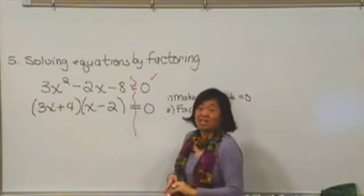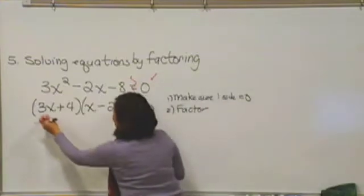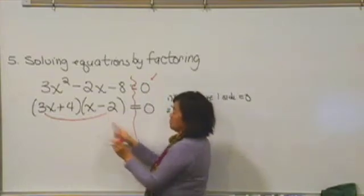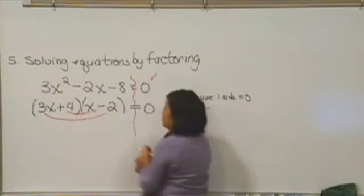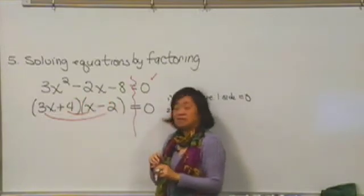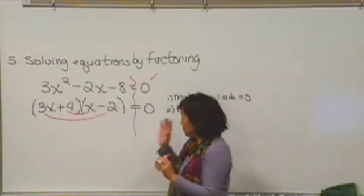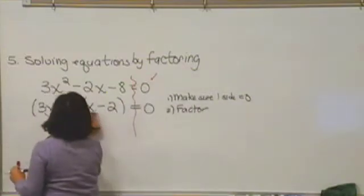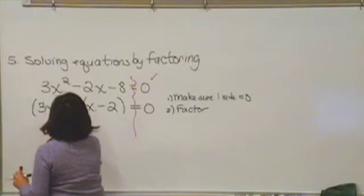Let's just do a quick check and make sure that that's fine. If I check the outside ones, 3x and negative 2, that's negative 6 and positive 4. Negative 6 and positive 4 gives me negative 2. And if I check the last ones, 4 times negative 2 is negative 8. So we're good on our factoring. So step number two is factor. Make one side zero, then factor.